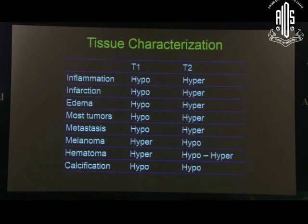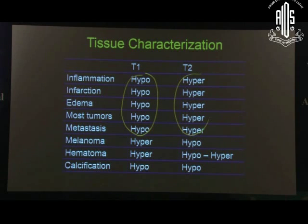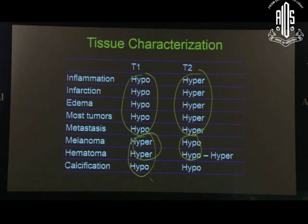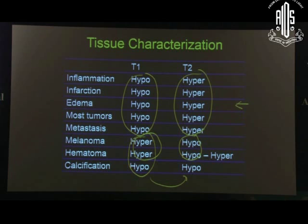Melanoma and haematoma are hyper on T1 and hypo on T2, whereas calcification is hypo on both T1 and T2. A simple way of remembering: almost everything is hypo T1/hyper T2, except melanoma and haematoma which are hyper T1/hypo T2, and calcification which is hypo on both. Postgraduate students must remember what is T1 and T2, what is a fat-suppressed image or STIR sequence, and the T1/T2 signal characteristics for the major exceptions.